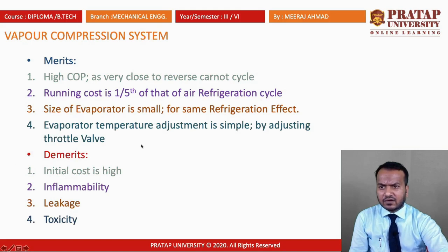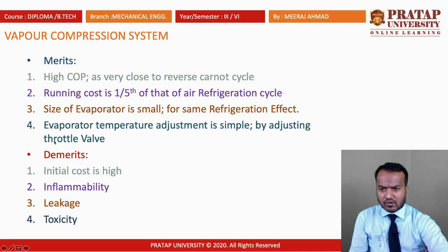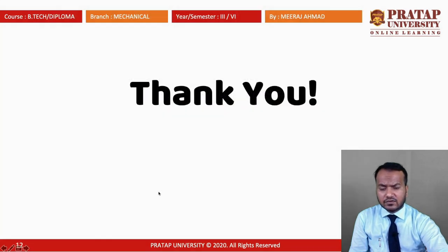Finally, the merits and demerits of the vapor compression system. Merits: high COP, very close to the Carnot cycle; running cost is one-fifth of an air refrigeration cycle; size of evaporator is small for the same refrigerant effect; evaporator temperature adjustment is simple using a thermistor by adjusting the throttle valve. Demerits: initial cost is very high; there are issues of inflammability, refrigerant leakage, and toxicity, so refrigerant selection must be done carefully.